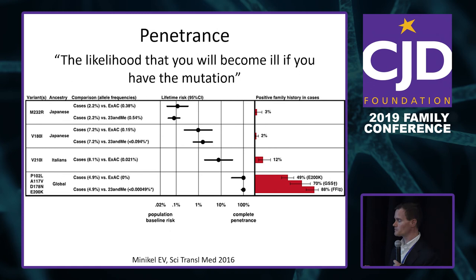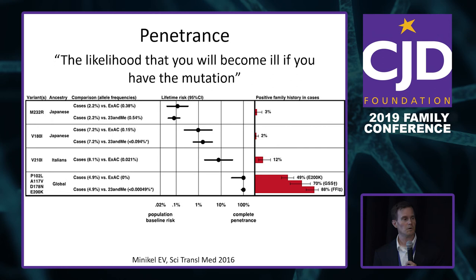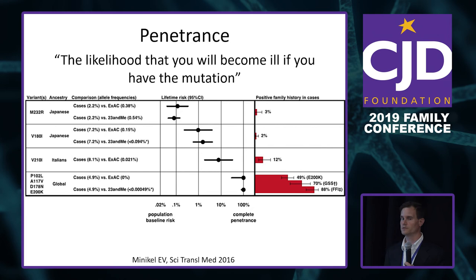Some mutations have very low penetrance — for example, V210I has penetrance of only about 10%, so it's not uncommon for those cases to have no family history. If you come from a genetic family, it's very important to know what mutation you have and what its penetrance is. Come to us with any questions and we'll help explain it.